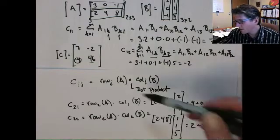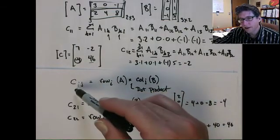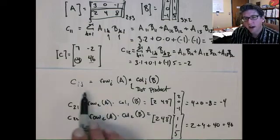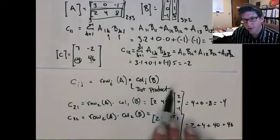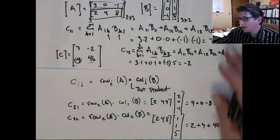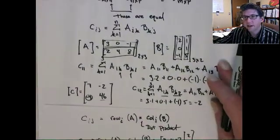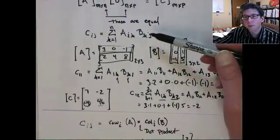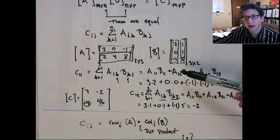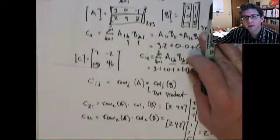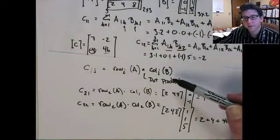So you want to think of it as, for each value in C, the ij value of C, it's the ith row of A dotted with the jth column of B. If you don't really quite even get that, you can just go back to this real basic definition and just do it in this manner. But try to start thinking about it in this way.